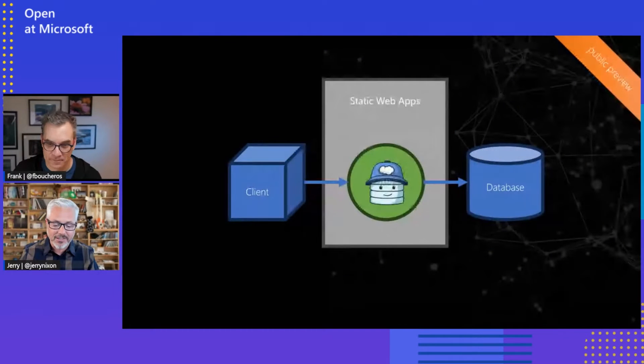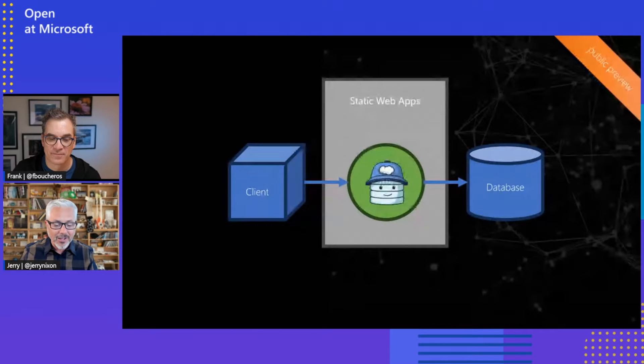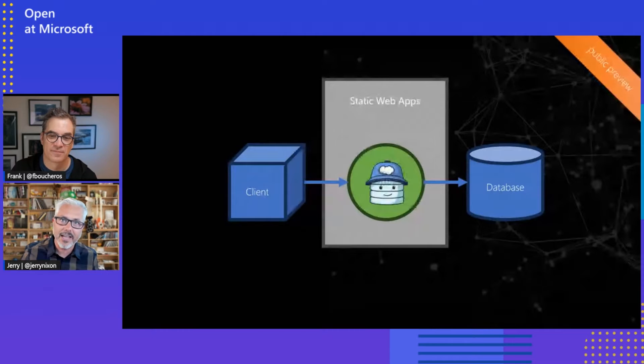But the easiest way to get started without a doubt is using static web apps. What we're trying to do is replace the API layer in a normal application, and where you put that API layer is really up to you. We're saying why not put it in static web apps — probably the easiest place inside Azure.